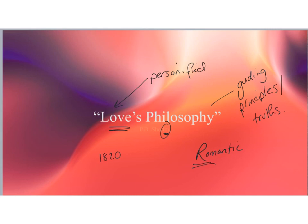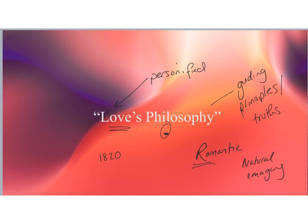Shelley uses natural imagery and the natural world to write a persuasive poem. In terms of comparisons, bear in mind the idea from Sonnet 29 of extended metaphor and the natural imagery — consider whether that would be a good match.